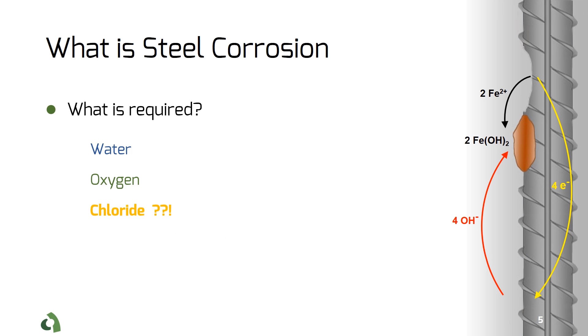We know that the availability of these three elements are essential for corrosion to happen. The reaction requires water and oxygen. However, experiments in real-case scenarios show that chloride plays a key role in the onset of corrosion.